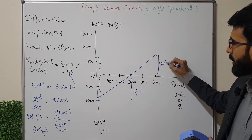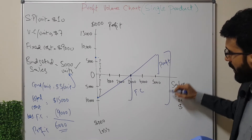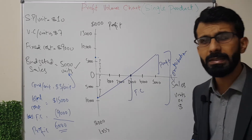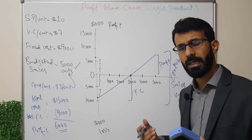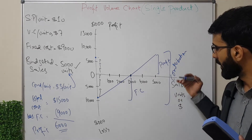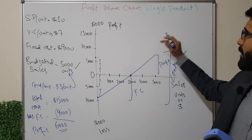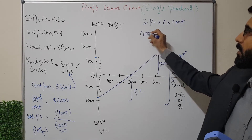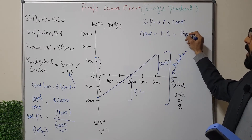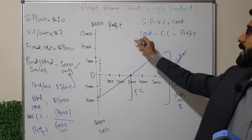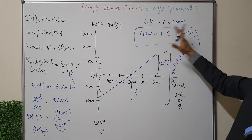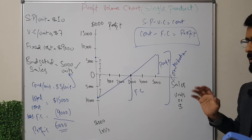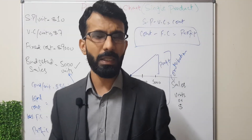The area representing the loss is our fixed cost, the upper area is profitability, and the combined area is contribution. This aligns with the relationship: contribution equals fixed cost plus profit — a rearrangement of the equation where selling price minus variable cost equals contribution, and contribution minus fixed cost equals profit.